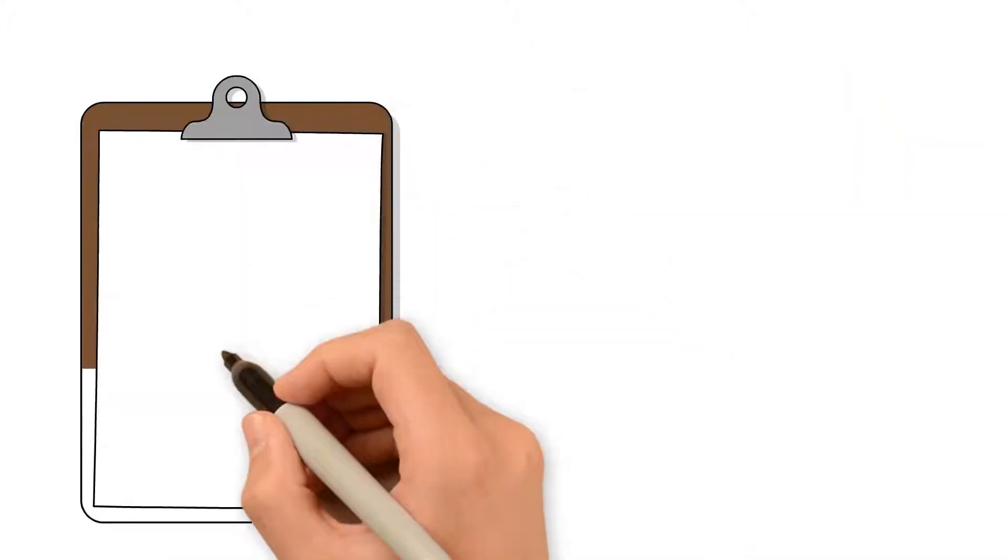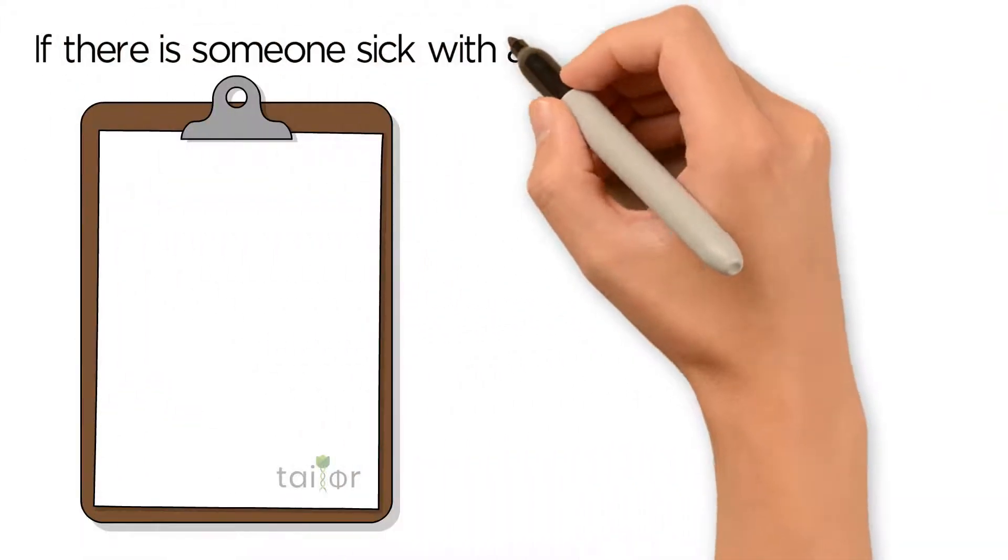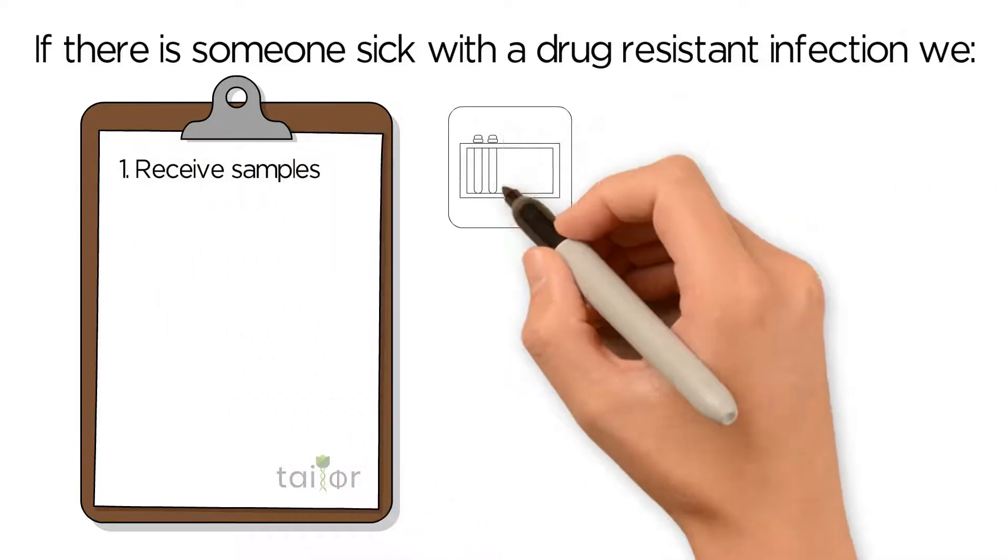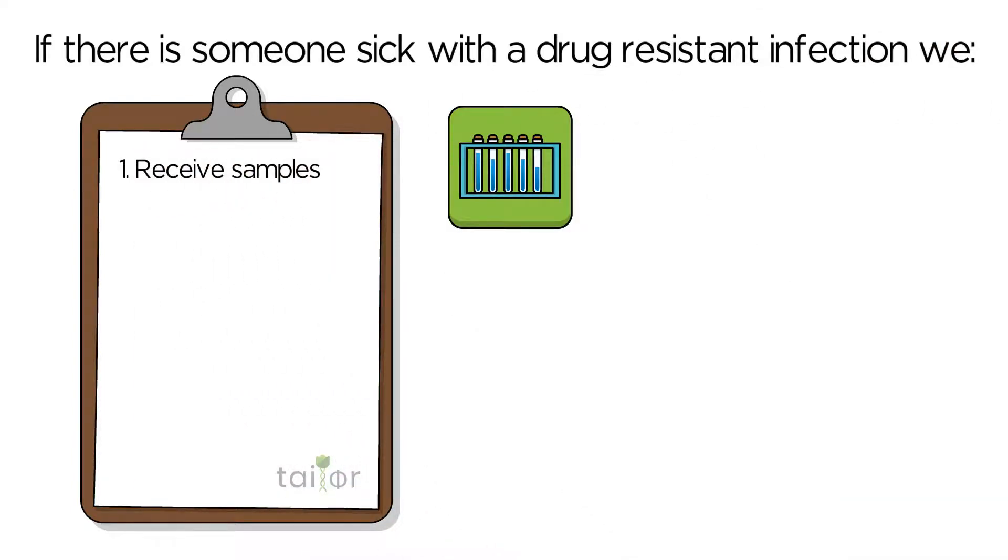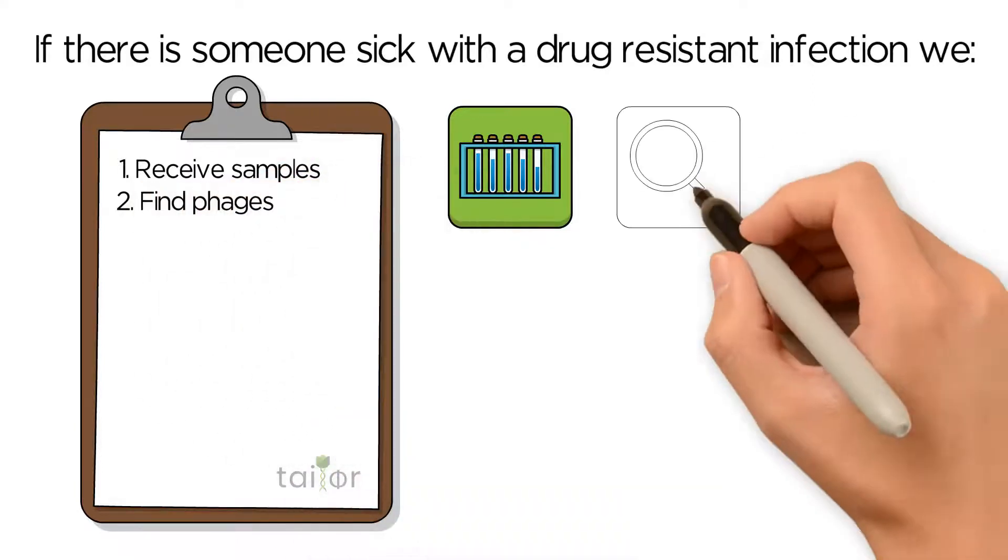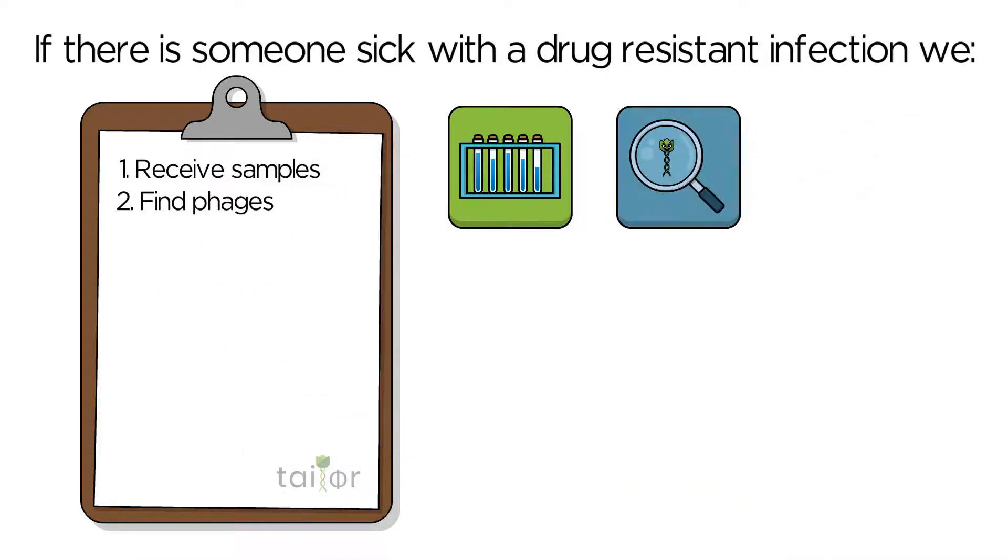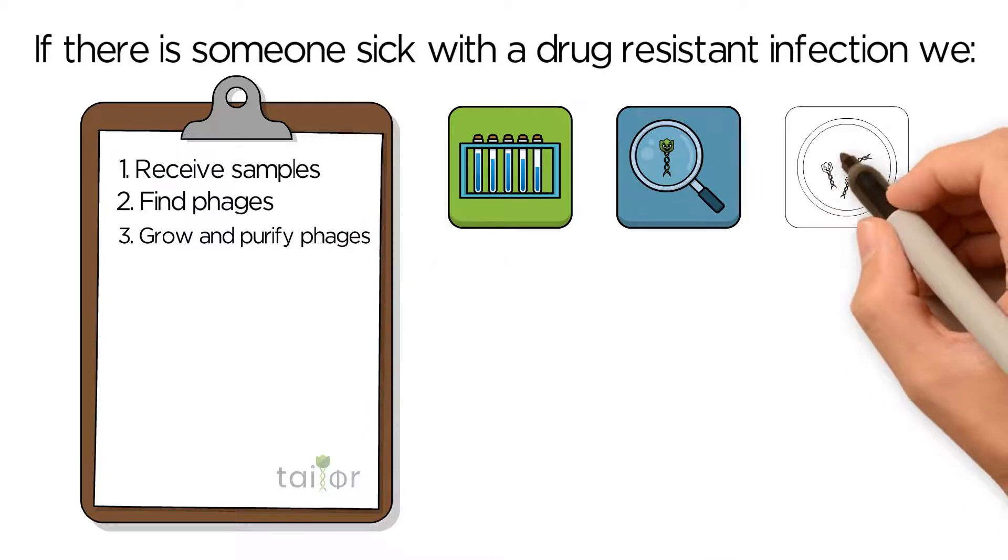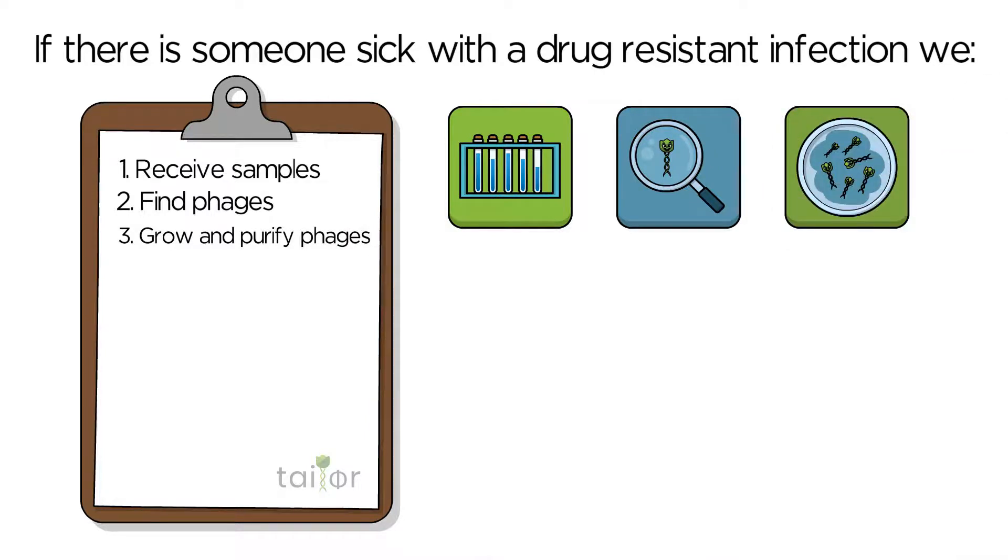Here at Taylor, if there is someone sick with a drug-resistant infection, we receive samples from the clinician of the bacteria or clinical sample. Find phages like Taylor from a variety of environmental sources that can kill bacteria from the patient sample. Grow the phages in the lab to have enough to treat and purify them of any bacterial or environmental contaminants.